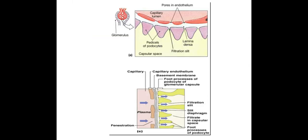Here is another picture showing the different layers involved. On one side is the glomerulus; first we have the fenestrations, then the basement membrane, and then the podocytes represented by the purple structures. Another image below shows the three different barriers through which the glomerular filtrate must pass in order to get into the Bowman's capsule: fenestrations, basement membrane, and podocytes.